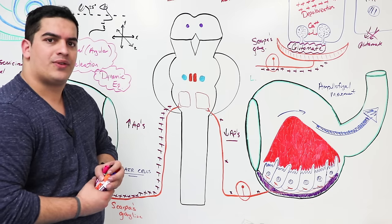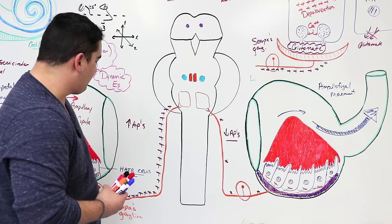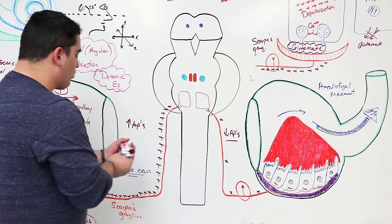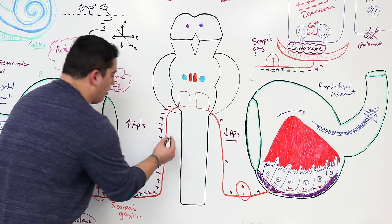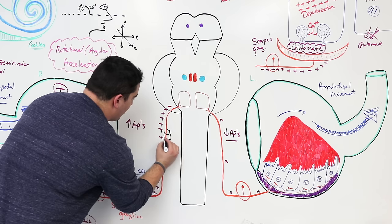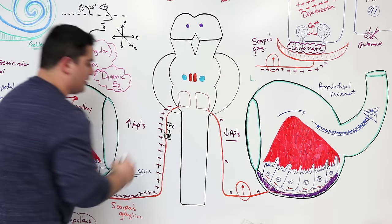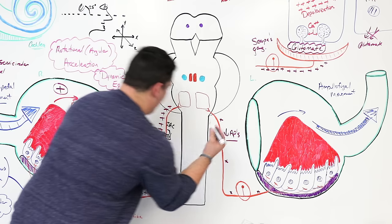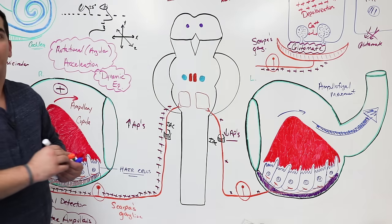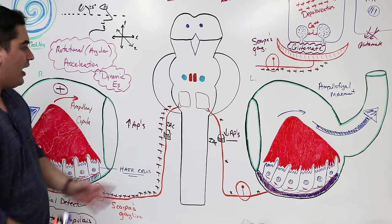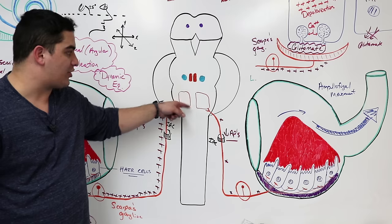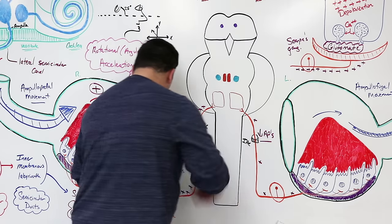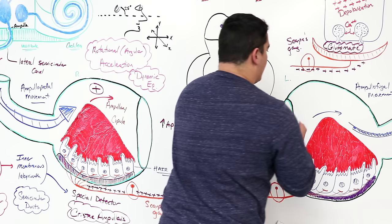Scarpa's ganglion processes become part of the vestibular branch of the vestibulocochlear nerve — cranial nerve 8. It runs through a hole in the skull called the internal acoustic meatus, or internal acoustic canal (IAC), and then into the central nervous system, reaching a specific point within the medulla. The right side is stimulated due to the rotation to the right, and the left is inhibited.